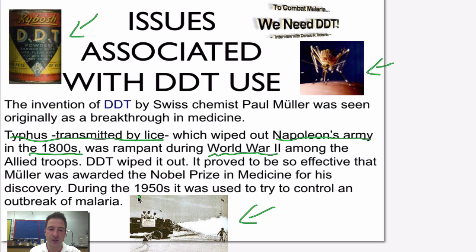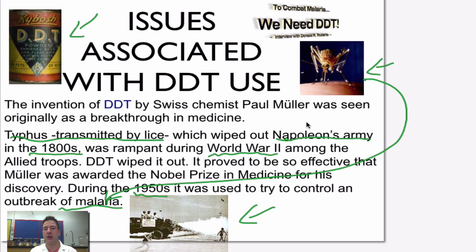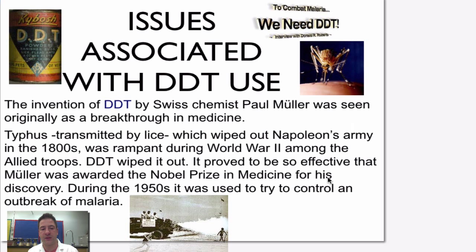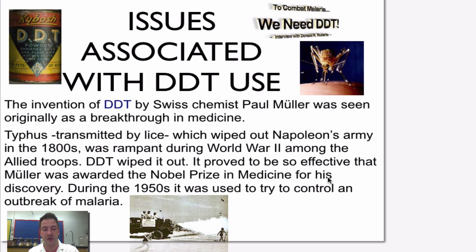In the 1950s, they looked at using DDT to control malaria, a disease caused by mosquitoes. They started to control the outbreak and malaria cases were decreased significantly. But then they also found out later that there were some very harmful effects associated with DDT use. So DDT was used to control insects, but it did eventually have very harmful effects in the environment.